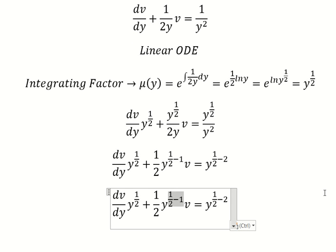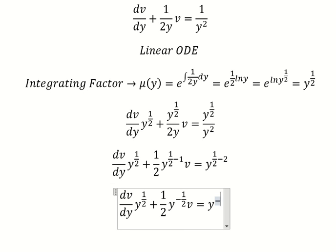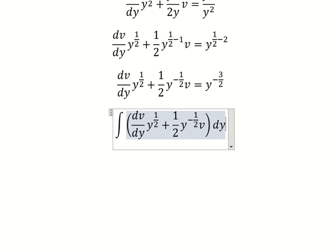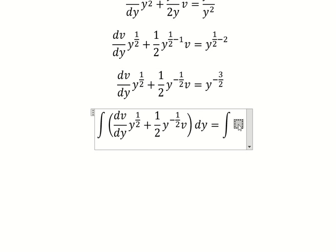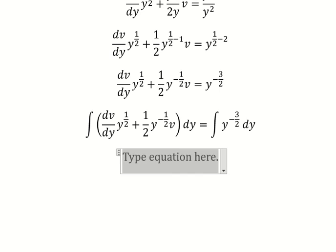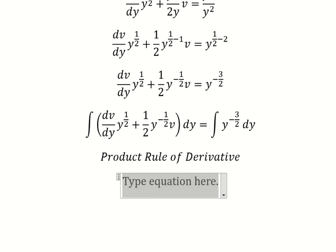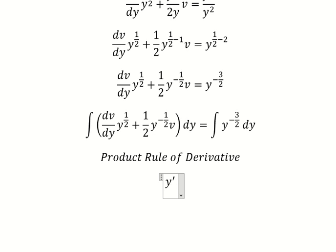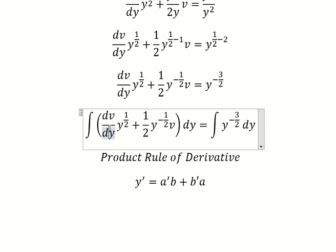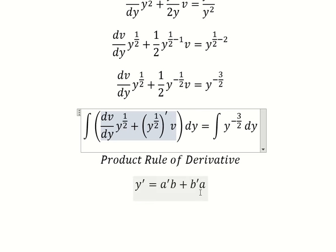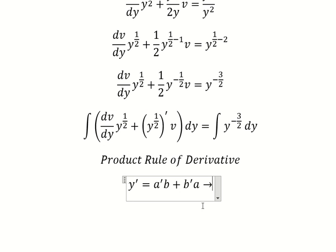This one we have negative one over two, and this one we have negative three over two. Next we integrate both sides. We can use the product rule of the derivative. We have the formula here: the first derivative of the first function multiplied by the second, plus the first function multiplied by the first derivative of the second. The integral of this gives us the following.